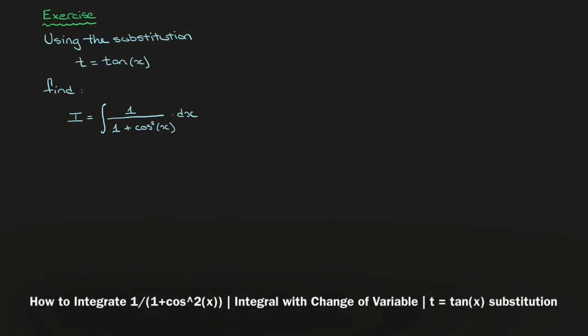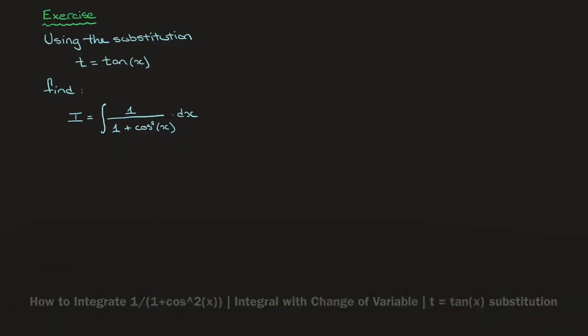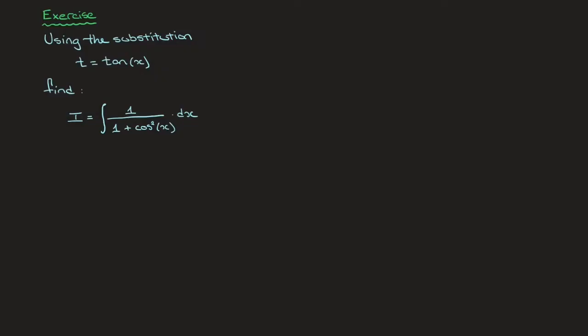Hi everyone. We now work through a second example in which we use the substitution t equals tan of x to find the integral I, which is defined as the integral of 1 over 1 plus cosine squared of x.